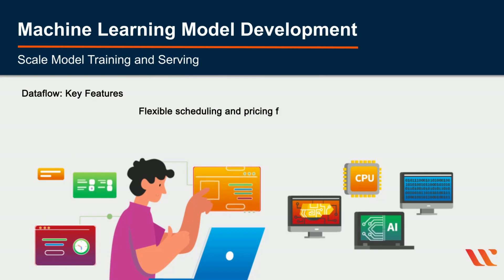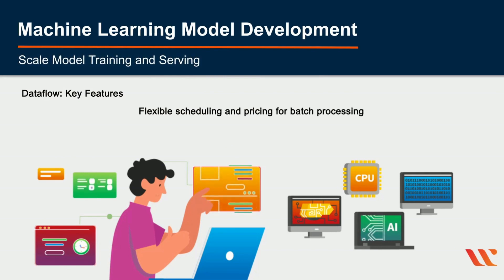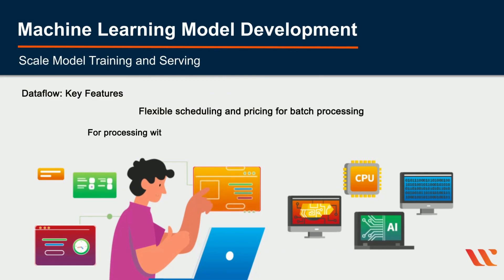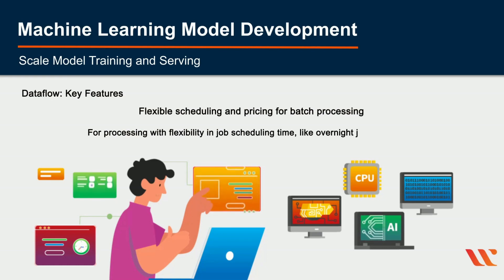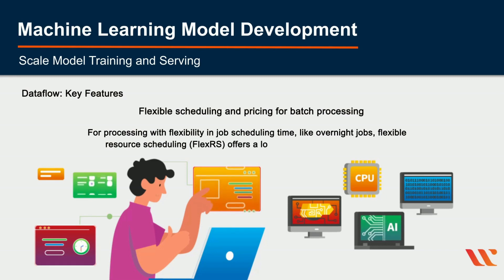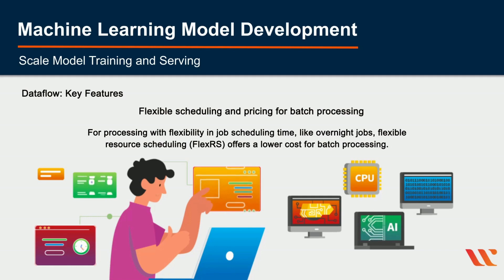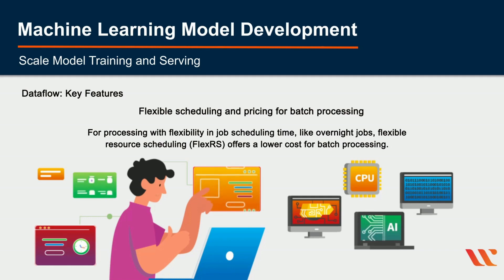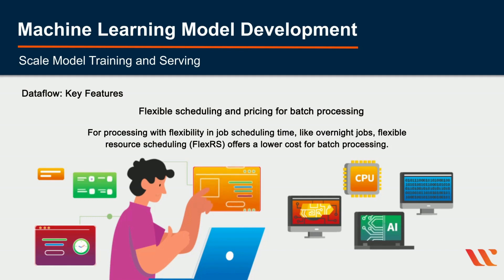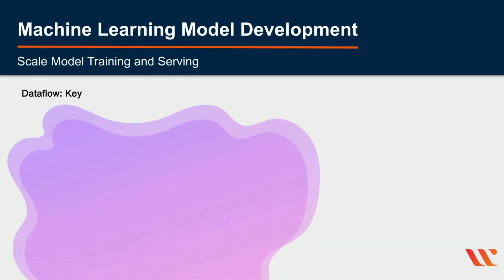Flexible Scheduling and Pricing for Batch Processing: For processing with flexibility in job scheduling time, such as overnight jobs, Flexible Resource Scheduling (FlexRS) offers a lower price for batch processing. These flexible jobs are placed into a queue with a guarantee that they will be retrieved for execution within a 6-hour window.